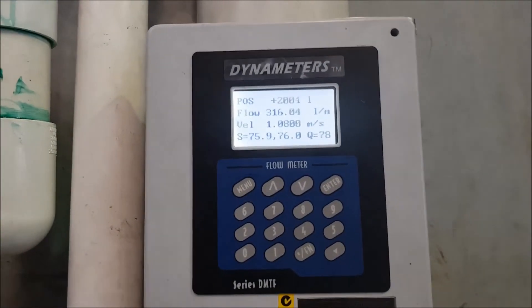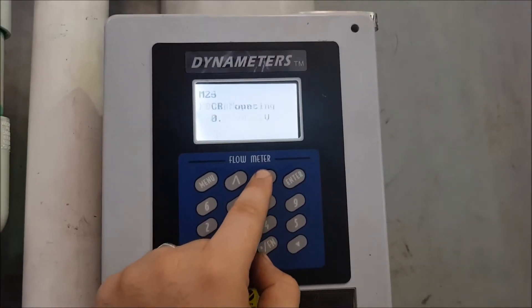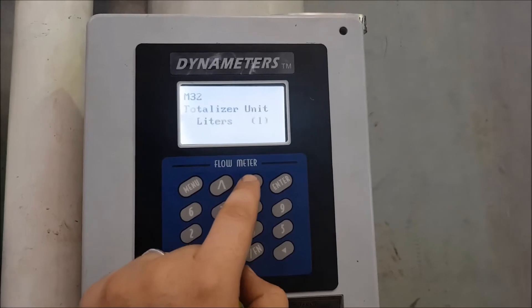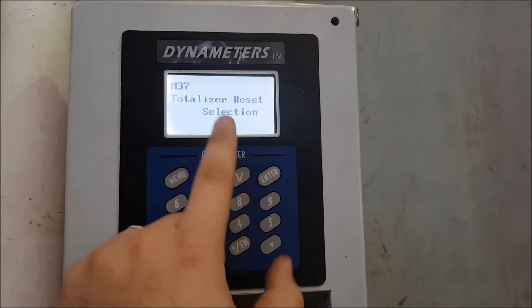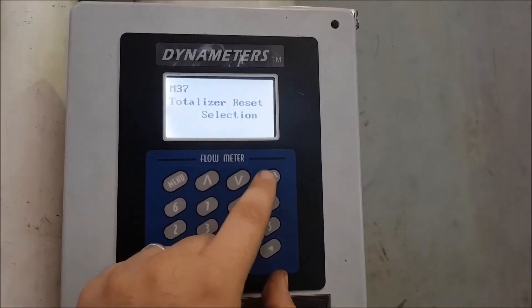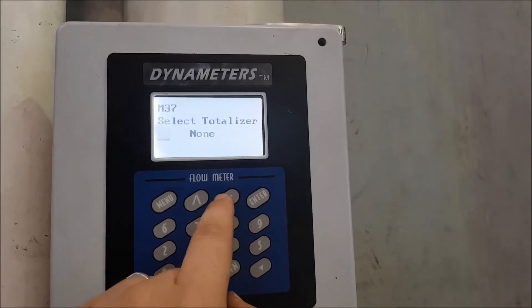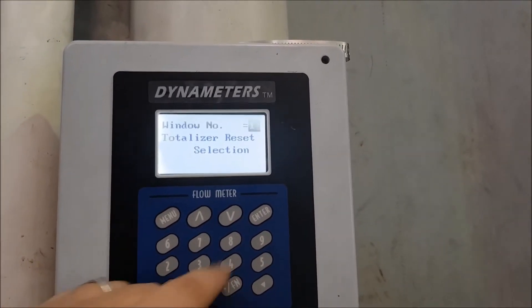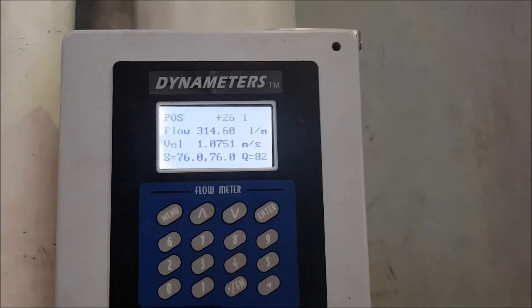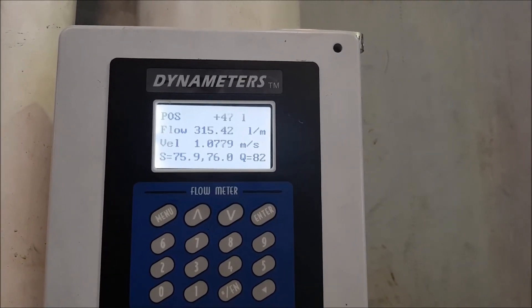The totalizer can also be reset fairly simply. I'll find where that menu is. Totalizer reset. Okay. So that's menu 37. Press enter. Totalizer reset. Change it to yes. And change it to all. It says reset finished. And back on menu one, you'll see that totalizer at the top has reset to zero and gradually increasing again.